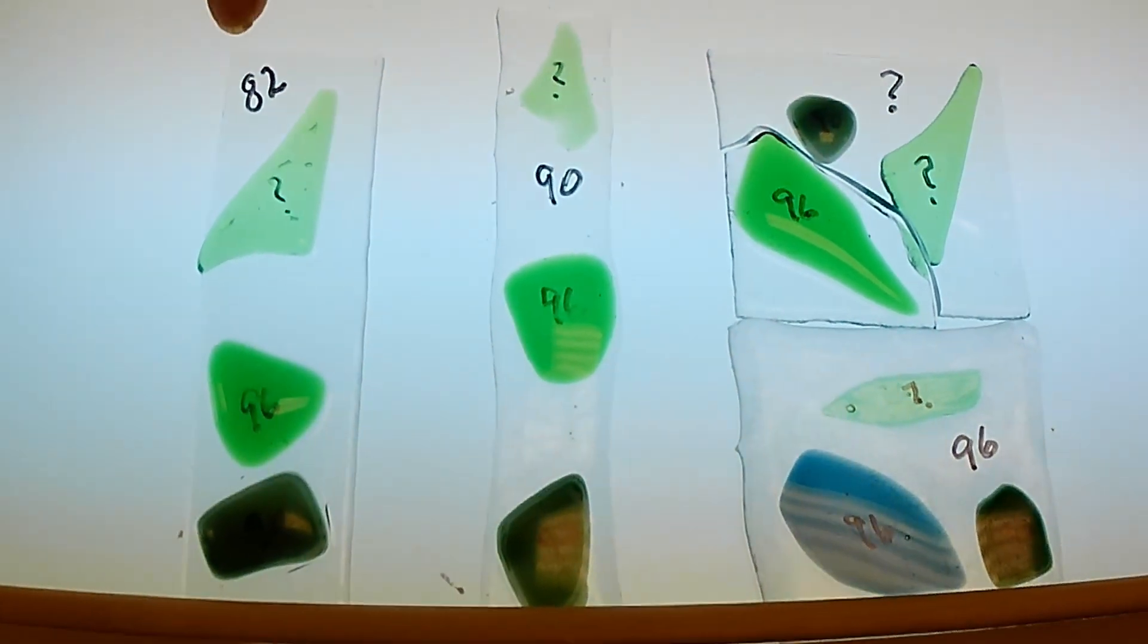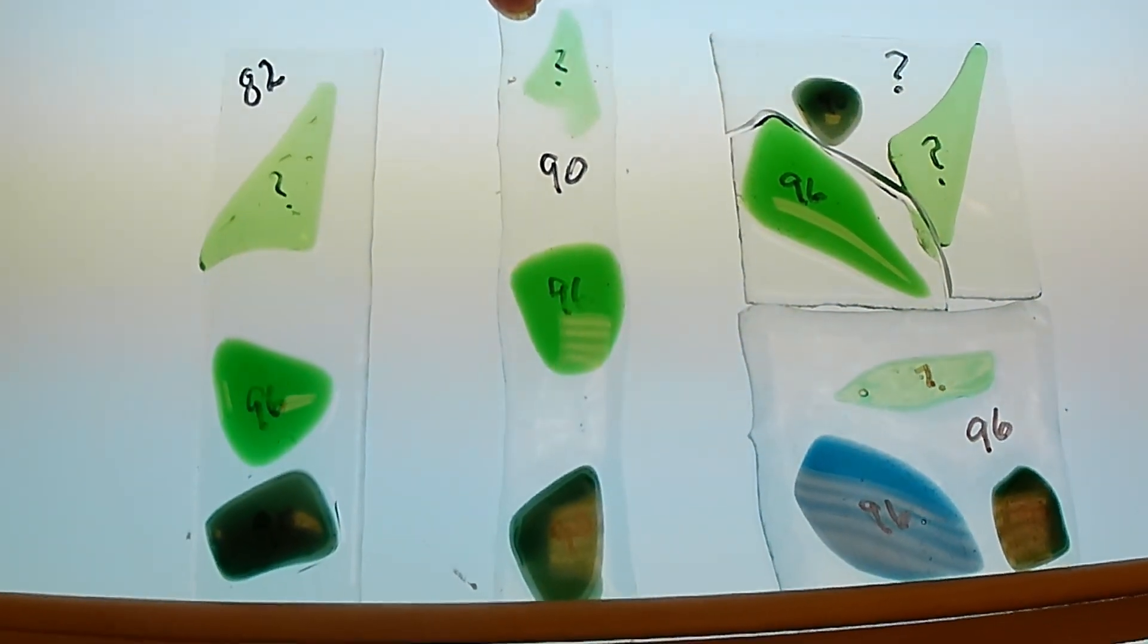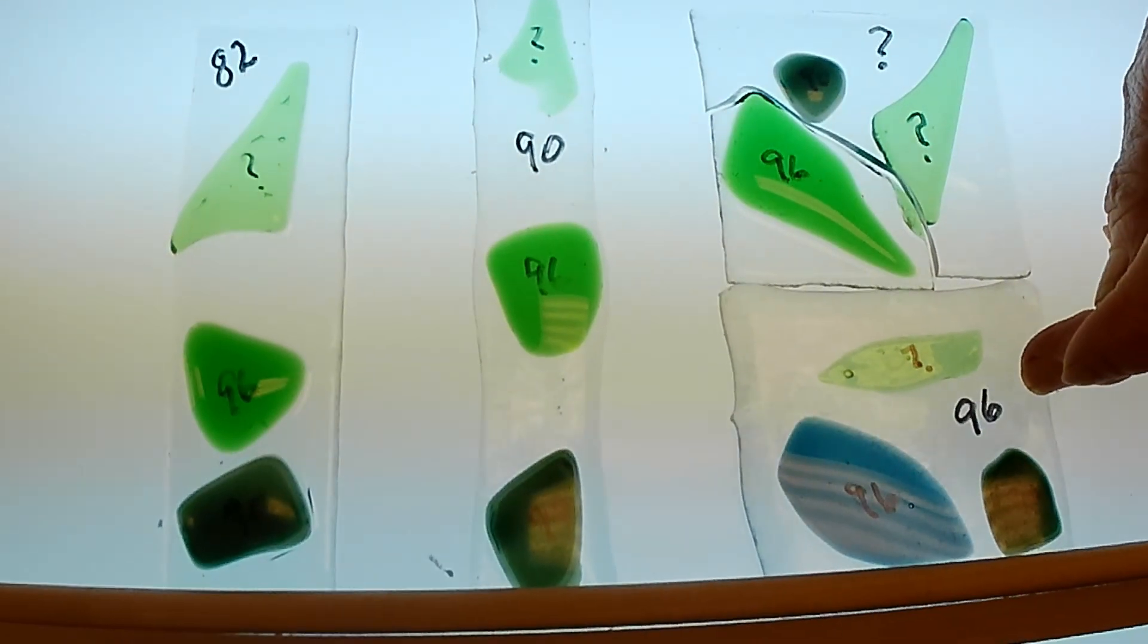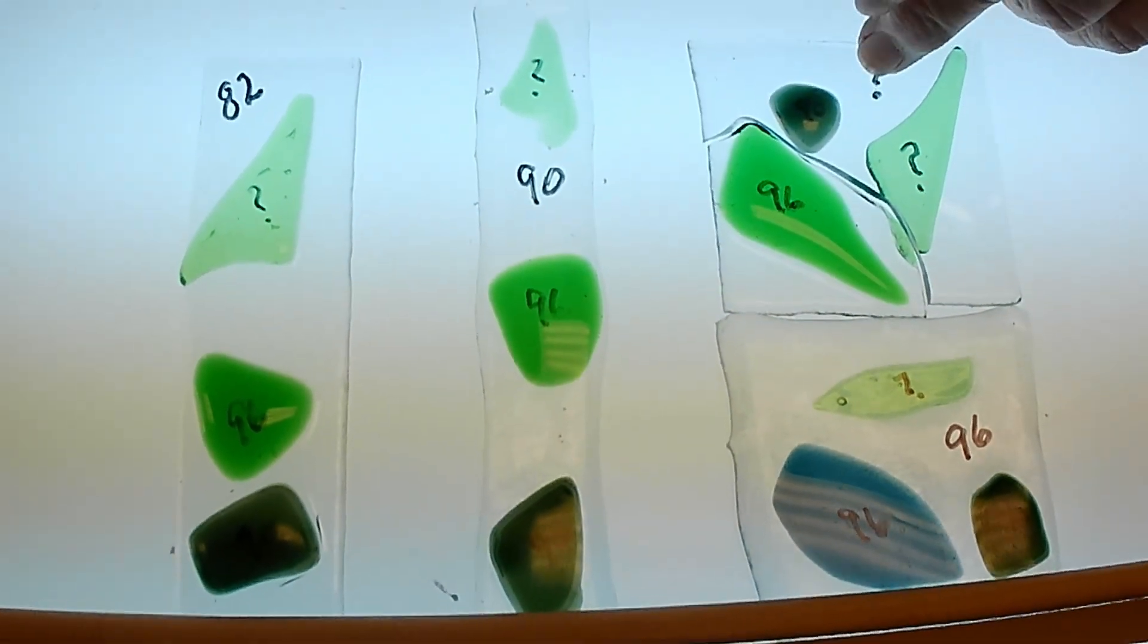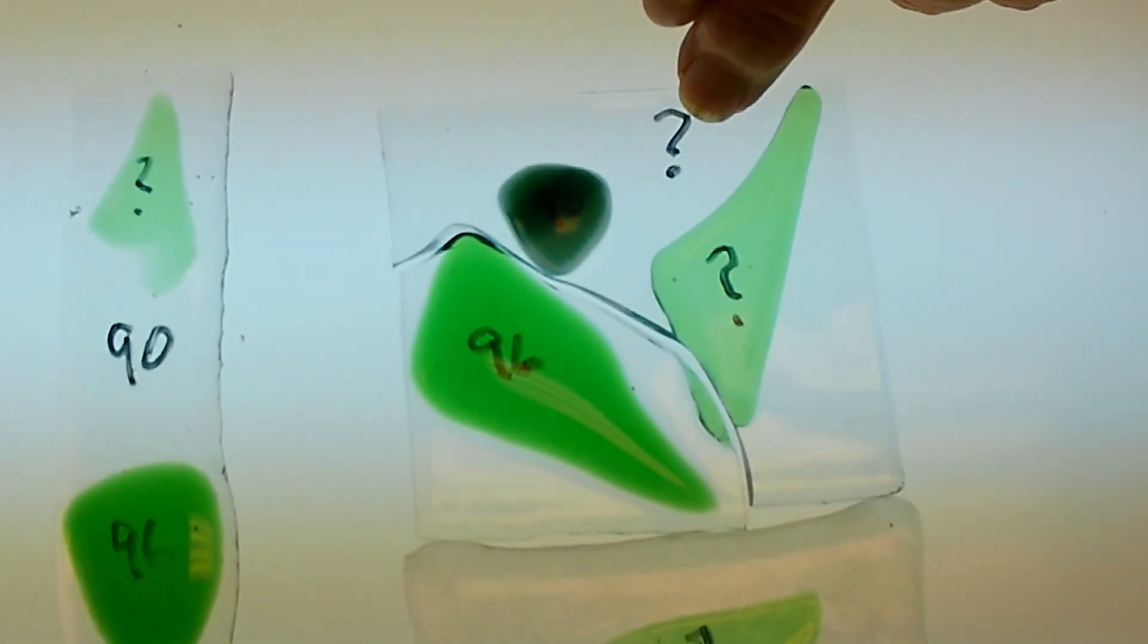Now, 82 is float glass, 90 is bullseye, 96 is spectrum. This is old window glass, probably before float glass.